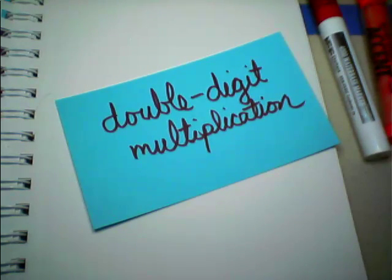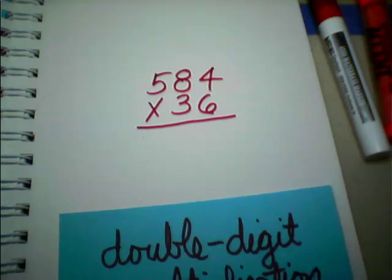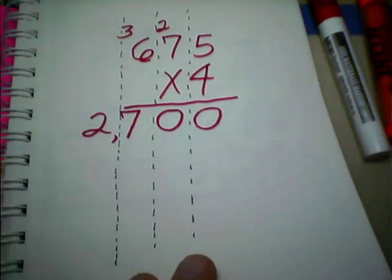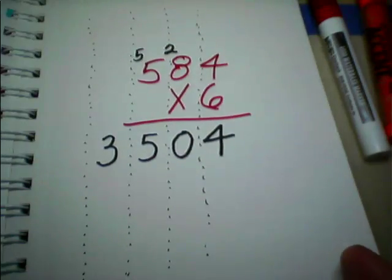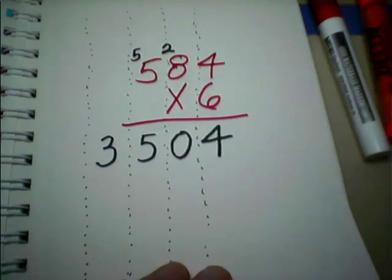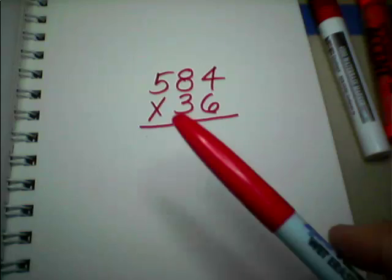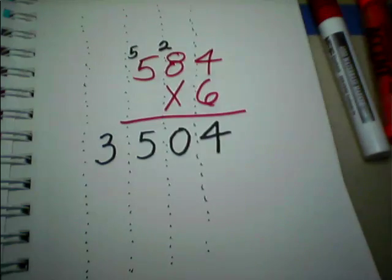Okay, double digit multiplication. If things went according to plan, we already did our warm-up problem. And our warm-up problem that we're going to look at is 584 times 36. And our warm-up problem was... No, that's not right either. 584 times 6. This is only different because it's a double digit. We've got 36 instead of just 6.